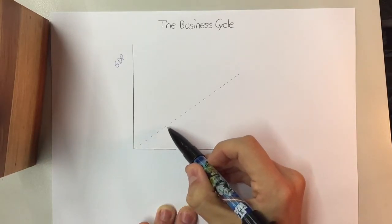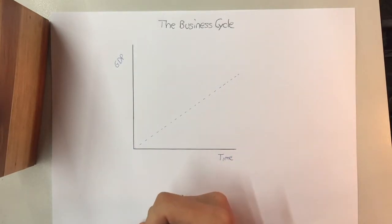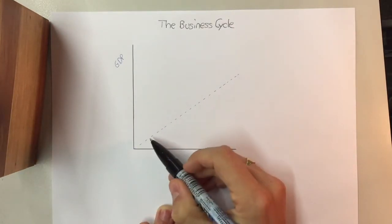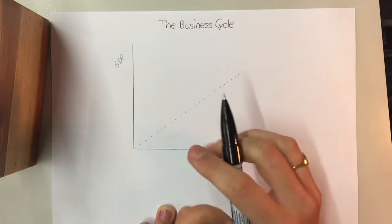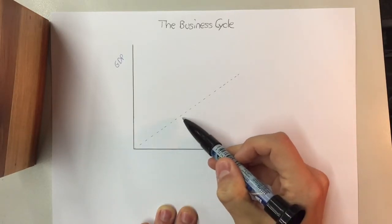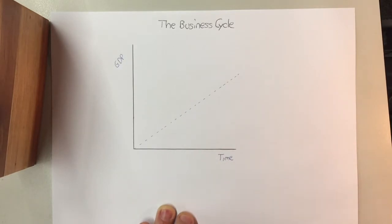So we believe that that's going to be steadily growing throughout the year. And that's what it should be. If we are maxing everything out at its highest potential, that's what it should look like. However, in reality, in our economy, we have ups and downs.